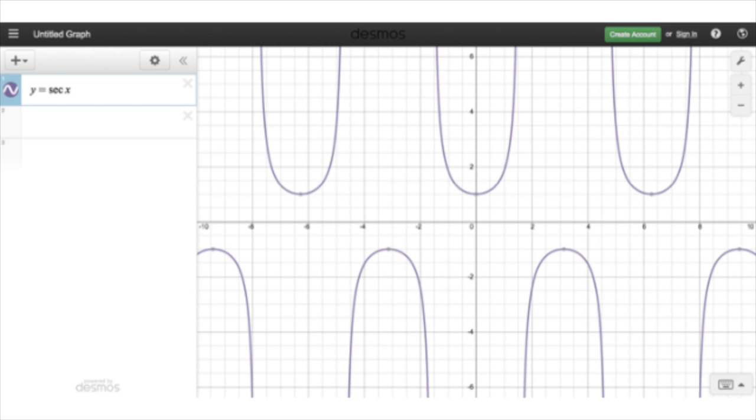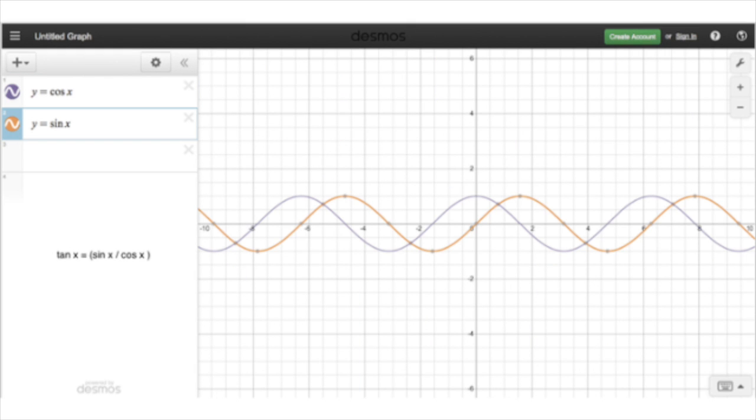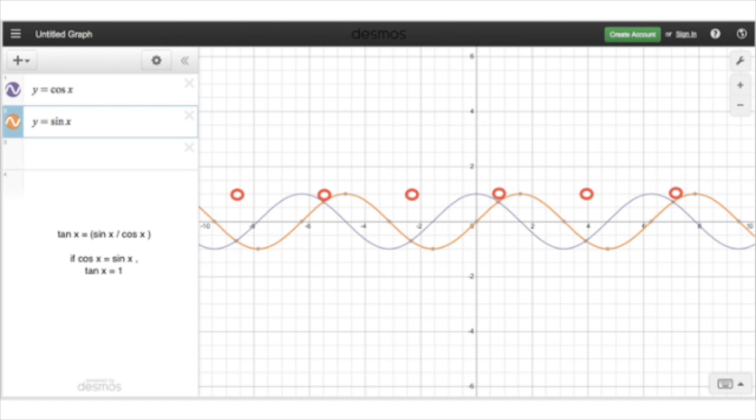If you look at the 2 sine and cosine together, and you think to yourself, well, the tangent is the sine over the cosine. Well, now, all of a sudden, that creates some interesting things. Wherever the sine and the cosine are equal, in other words, wherever those two graphs intersect, the tangent is going to be 1. So each one of those points we know is going to be on our curve.